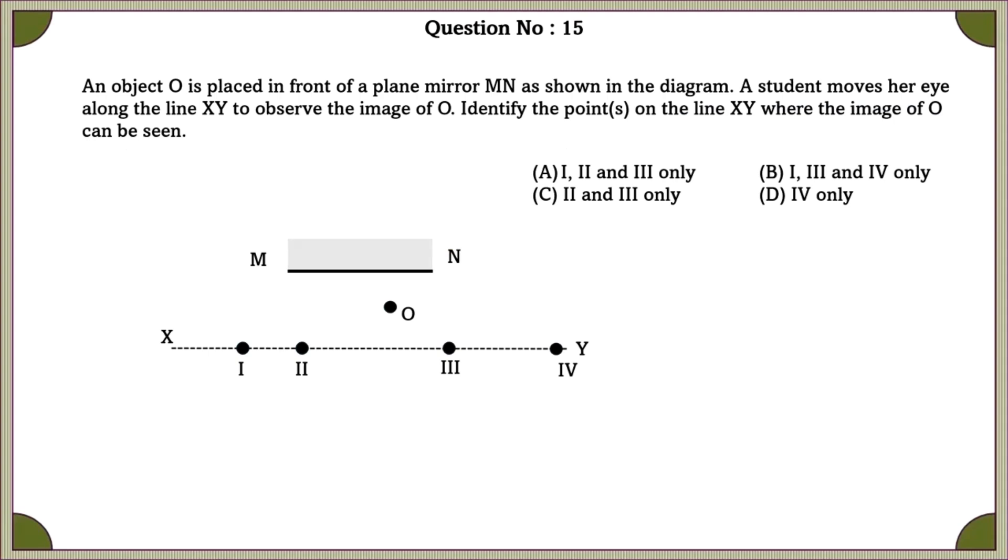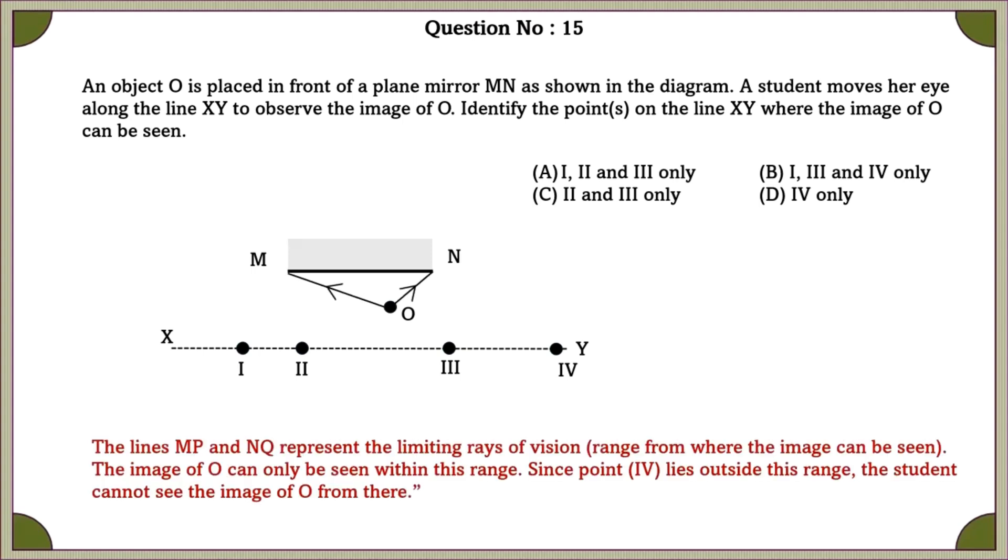Question number 15. An object O is placed in front of a plane mirror MN, as shown in the given diagram. A student moves her eye along the line XY to observe the image of O. Identify the point on the line XY where the image of O can be seen. The lines MP and NQ represent the limiting rays of vision range from where the image can be seen. The image of O can be seen within this range. Since point 4 lies outside this range, the student cannot see the image of O from there.